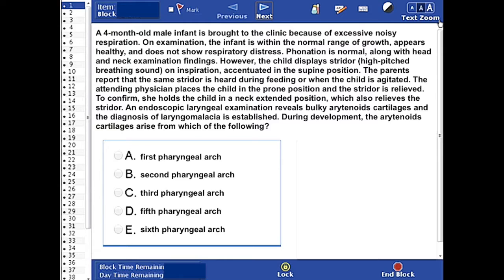A 4-month-old male infant is brought to the clinic because of excessive noisy respiration. On examination, the infant is within the normal range of growth, appears healthy, and does not show respiratory distress. Phonation is normal, along with head and neck examination findings.